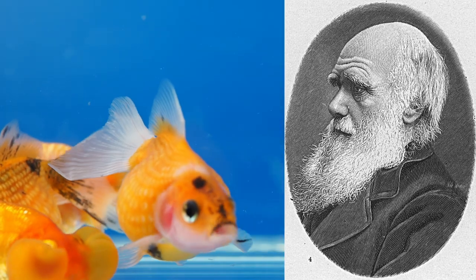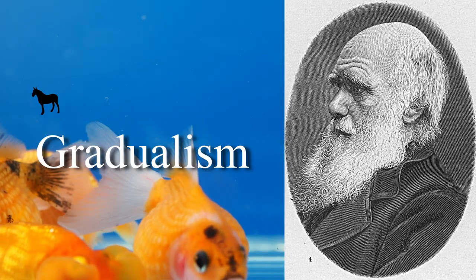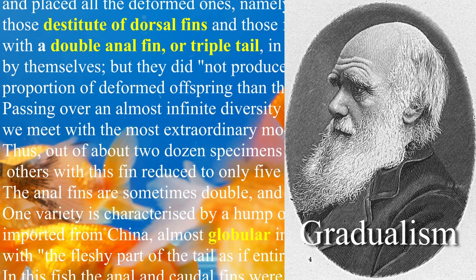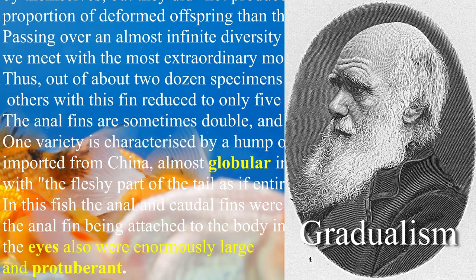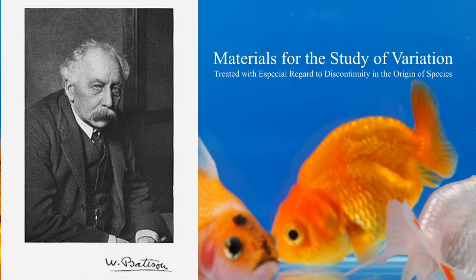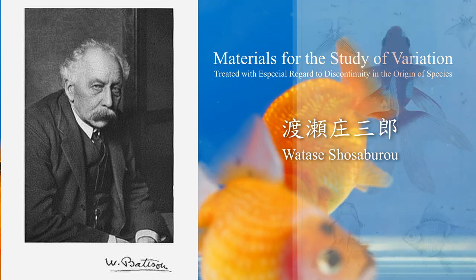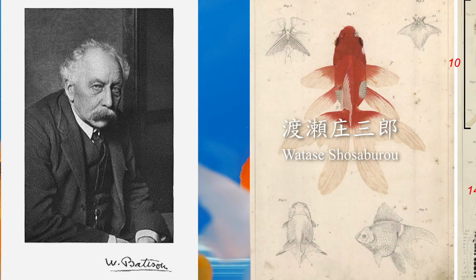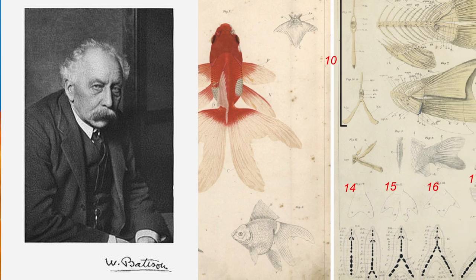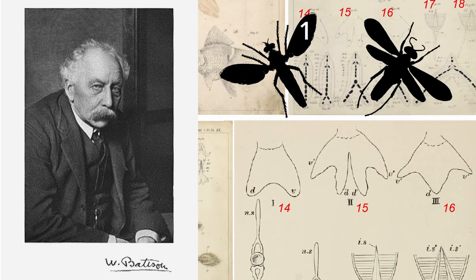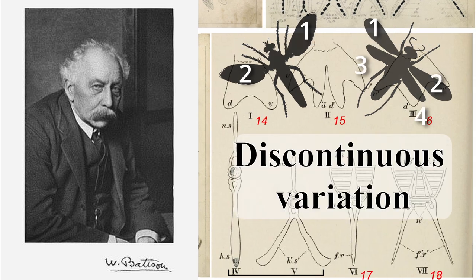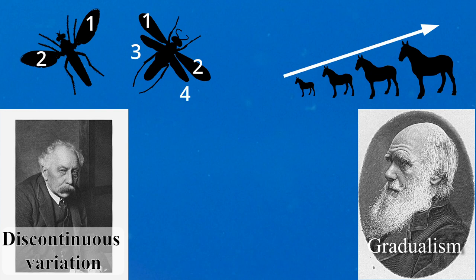Darwin used ornamental goldfish variations to support his idea of gradual change in animal traits. In his book, he described almost all of the mutated goldfish morphologies. Similarly, Bateson introduced twin-tailed goldfish in his monograph. He cited a goldfish study by a Japanese scientist, Watase. Watase reported a detailed description of the morphology of the twin-tailed goldfish. Bateson used the twin-tailed goldfish as a representative example of discontinuous variations and protested against Darwin's gradual evolution.